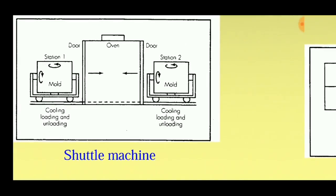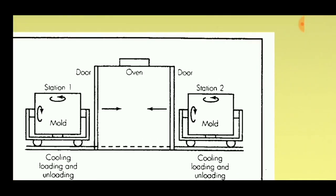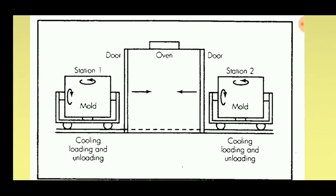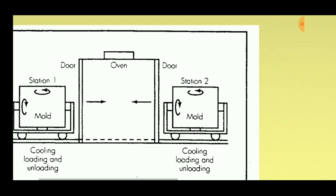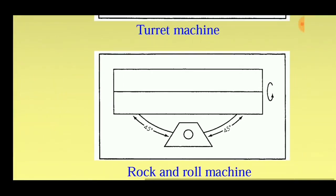The third method is the shuttle machine. Here the oven is placed at the center and the stations are present on the adjacent sides of the oven. The mold containing the plastic is rotated along the Y and X directions and then placed in the oven where the plastic melts. It is then taken out for cooling, and finally the plastic part is removed.